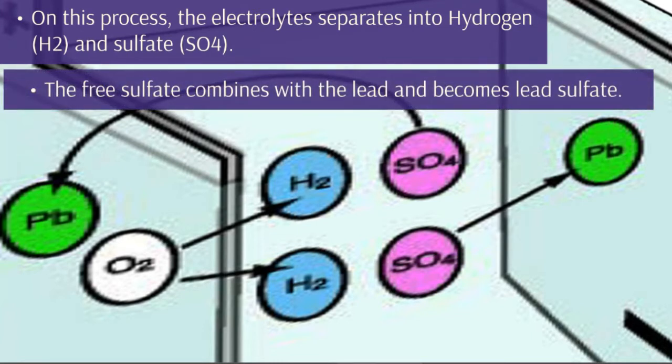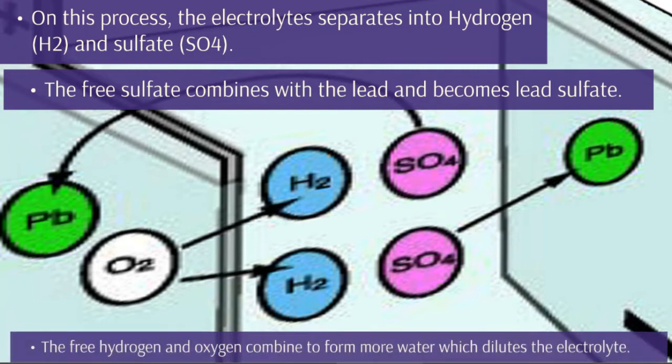The free sulfate combines with the lead and becomes lead sulfate. The free hydrogen and oxygen combine to form more water, which dilutes the electrolyte.